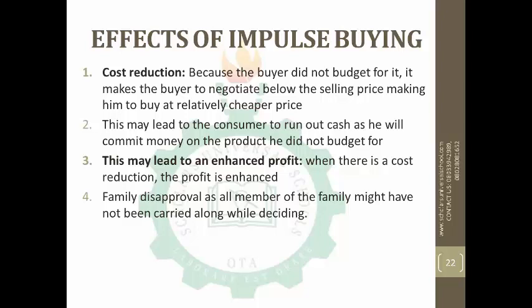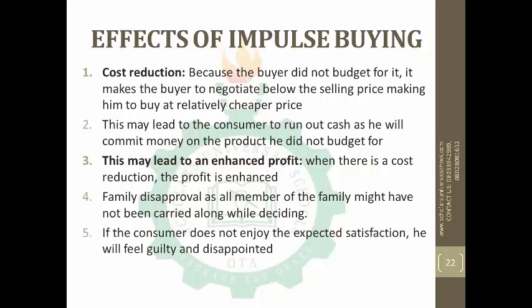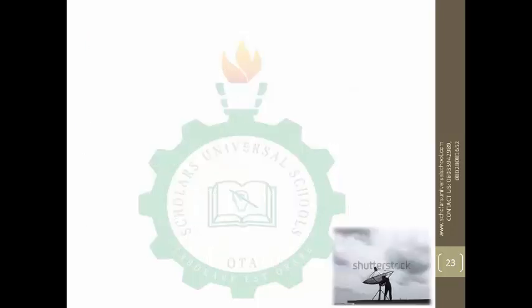The fourth effect is family disapproval, as all members of the family might not have been consulted when the decision was made. For example, Mummy might come from the market and buy something nobody planned for or discussed. If you were expecting something specific — say, ready-made clothing — but Mummy found something very cheap and bought that instead, by the time she gets home you may not like what she bought. There will be family disapproval because you were not carried along. Lastly, if the consumer does not enjoy the expected satisfaction, they will feel guilty and disappointed — they will regret their decision.